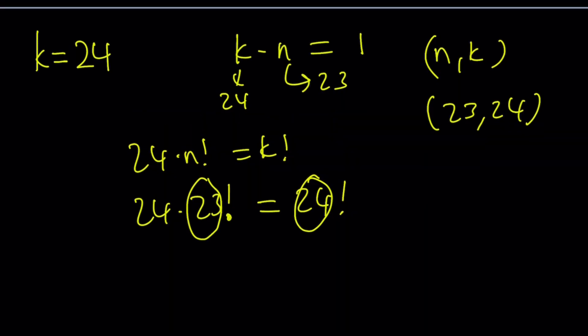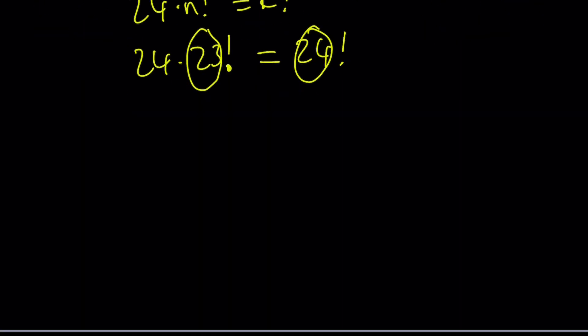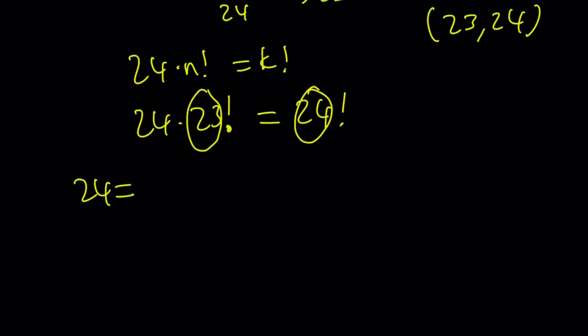We said that 24 must be written as a product of consecutive integers. We could also do 4 times 3 times 2 times 1. Since it's 4 factorial, it can be written as 4 times 3 times 2 times 1. So we use four numbers, and the largest one is 4. So that is our k. And k minus n is equal to 4. So that means k is 4, n is 0. In other words, we got another ordered pair: 0 comma 4. Is that the only way to do it?